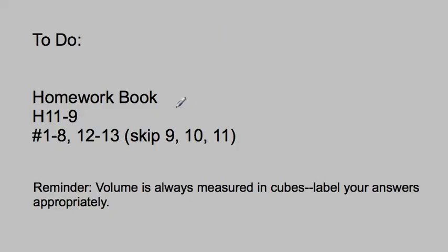Here's our to-do. We're working out of the homework book, H11-9. And you're going to do 1 through 8. Then you're going to skip 9, 10, and 11, and then do 12 and 13. And remember, volume is always measured in cubes, so remember to label your answers appropriately, and your answers will have a little three at the end.